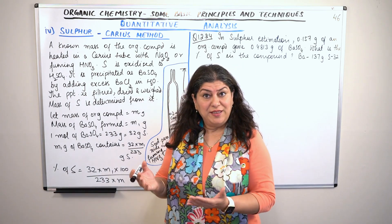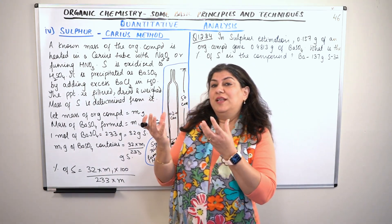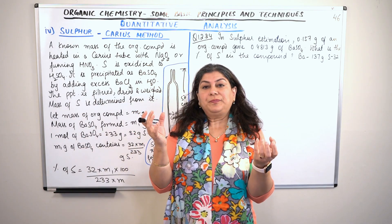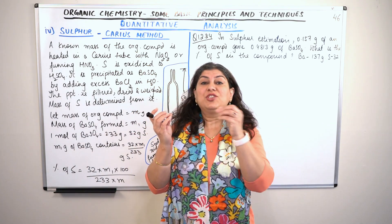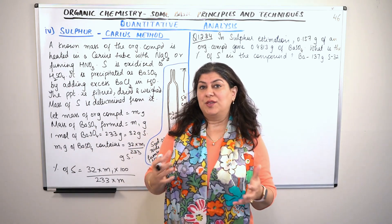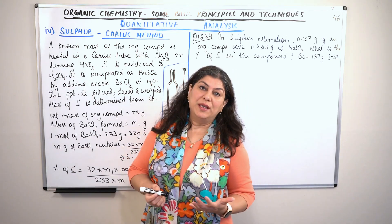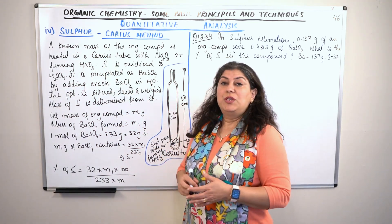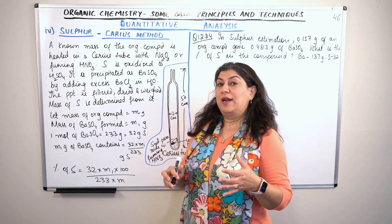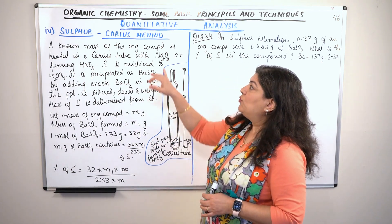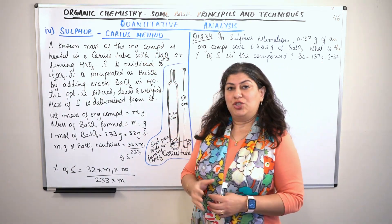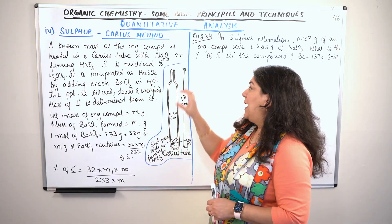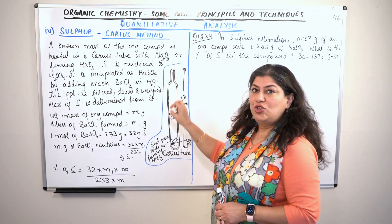We first identify the element and then we want to know how much of the element is present. Once we know all the elements present in the compound, we would like to know the mass percentages of each element so that we can determine the empirical formula. For the estimation of sulfur we use the Carius method, just as we used it for the estimation of halogens.